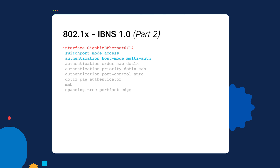The next two commands are the order and priority commands. With the order command, we can control at what order we authenticate a user, whether it's using MAB or dot1x. If we want to set the priority, we can say we want to use dot1x as the priority because if this person is using a supplicant with 802.1x configurations, we want to prefer that over MAB. To activate this interface for 802.1x, the authentication port-control needs to be set to auto. Once done, set this interface to the authenticator option using the dot1x PAE command, ensuring we act as the authenticator when receiving and translating messaging over to the RADIUS when we send it to the ISE box.